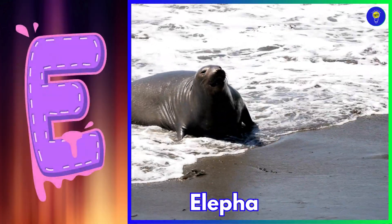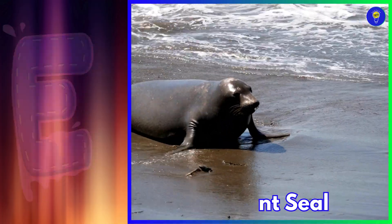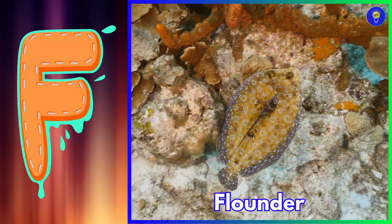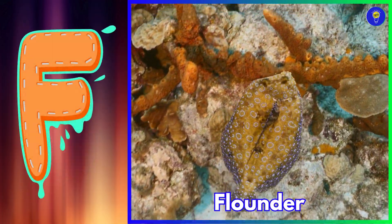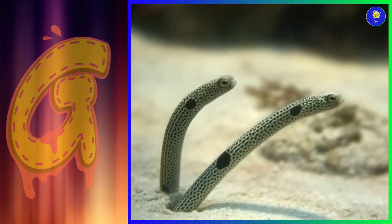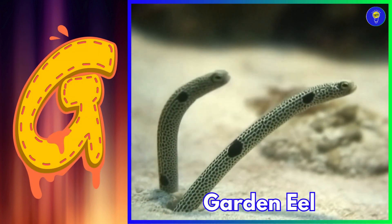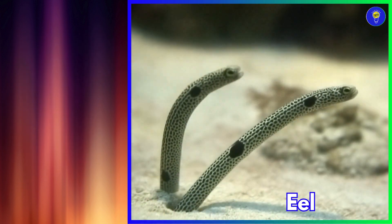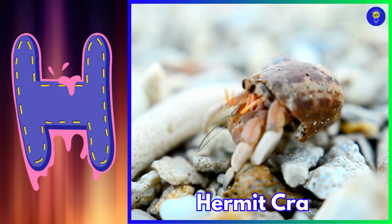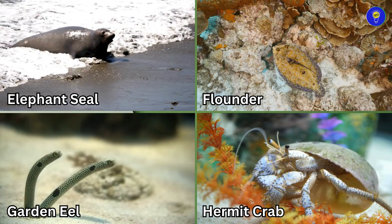E is for elephant seal. F is for flounder. G is for garden eel. H is for hermit crab.